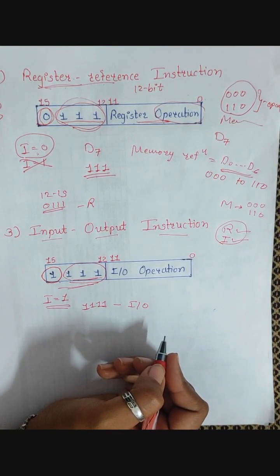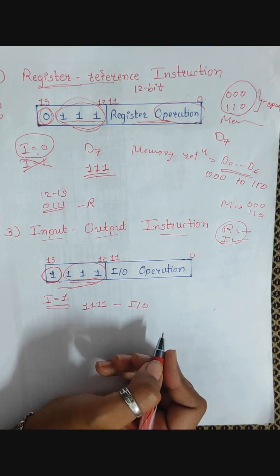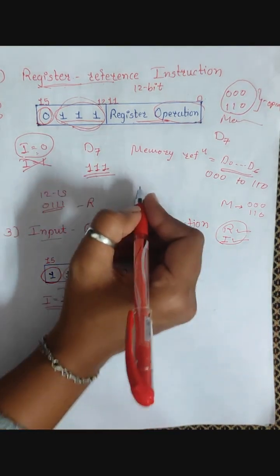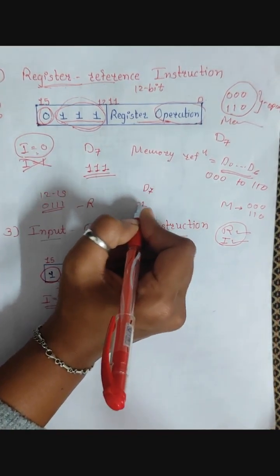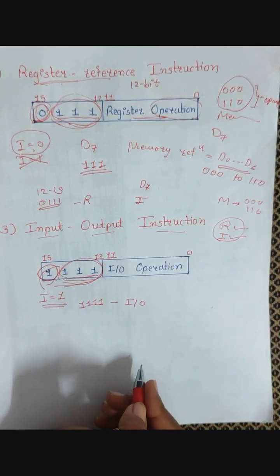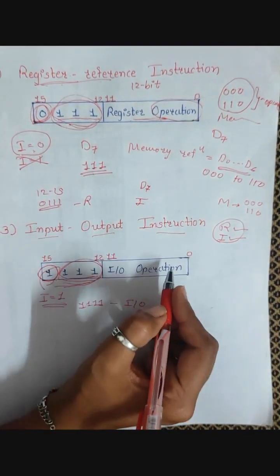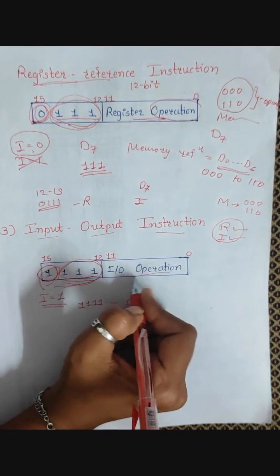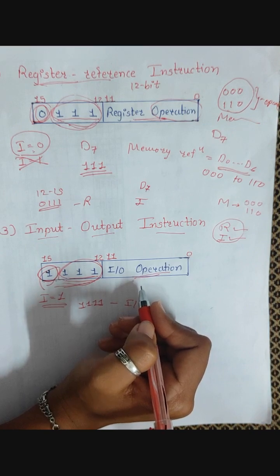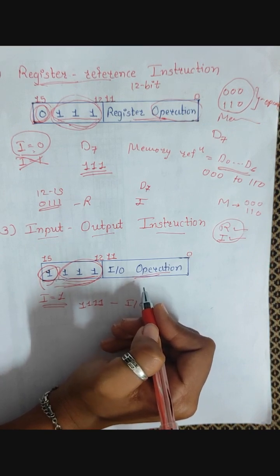In the instruction cycle, we need to recognize which kind of instruction it is — whether it is a memory reference instruction, register reference instruction, or input-output instruction. For that decision-making, we use D7 and the i bit. For input-output instructions, bits 0 to 11 indicate which kind of input-output operation is being performed.